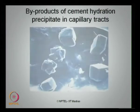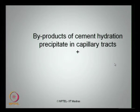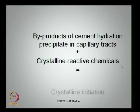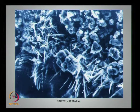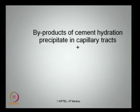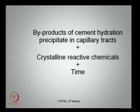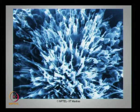Let us look at the byproducts of cement hydration, which precipitate in capillary tracts. Byproducts of cement hydration precipitate in capillary tracts when added with the crystalline reactive chemicals, resulting in what we see here as crystalline initiation. So it gets initiated — the crystalline formation starts happening in various locations. Remember, it is a permanent formulation which sticks onto the pores of the concrete structure. Further, the byproducts of cement hydration precipitate in capillary tracts and when added to the crystalline reactive chemicals, over time will yield a product called fully developed crystalline structure. The pores are completely and permanently closed because of the formation of this permanent crystalline structure, which is a reaction happening between the chemical constituents of concrete and the crystalline material.